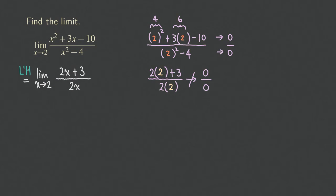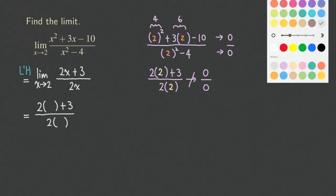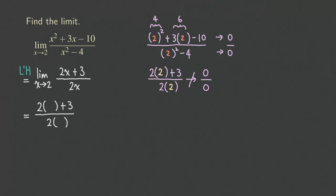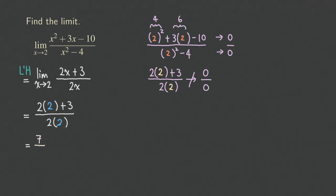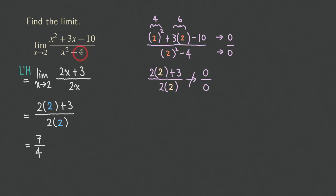It's actually quite simple now. We substitute x = 2 into (2x + 3) over 2x. The numerator gives 2 times 2 plus 3, which is 4 plus 3 equals 7. The denominator gives 2 times 2, which is 4. So our answer is 7 over 4. That's the limit of this function as x approaches 2.